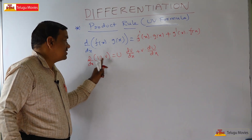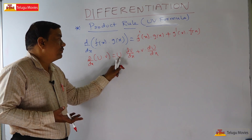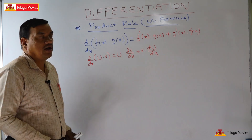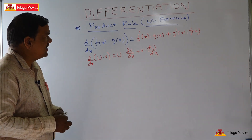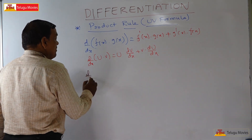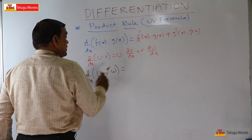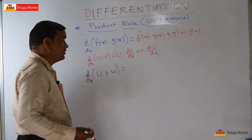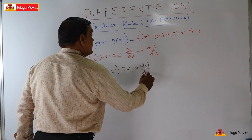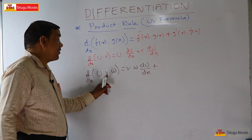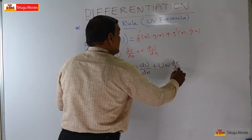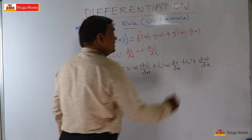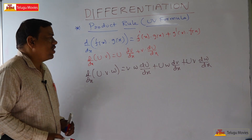If there are more than two functions, the same concept applies. For d by dx of u into v into w, it is equal to v into w times du by dx, plus u into w times dv by dx, plus u into v times dw by dx. So each function takes its turn being differentiated while the remaining functions stay as they are.